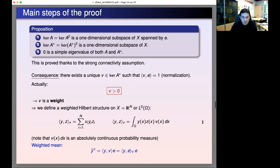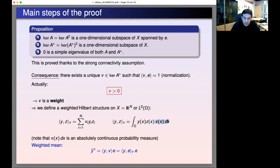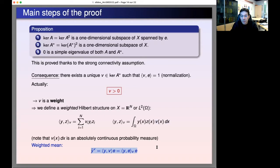Now that V is positive — this is the main fact — it can be interpreted as a weight. It gives a new geometry that is not Euclidean. In finite dimension, one can weight the usual Euclidean inner product; in infinite dimension, one can weight the usual L2 space with the weight V. The positivity of V is of course the crucial point. This is how we introduce the weighted mean that appears in the main theorem, and this weighted mean is exactly the natural limit of y(t) as t tends to infinity.